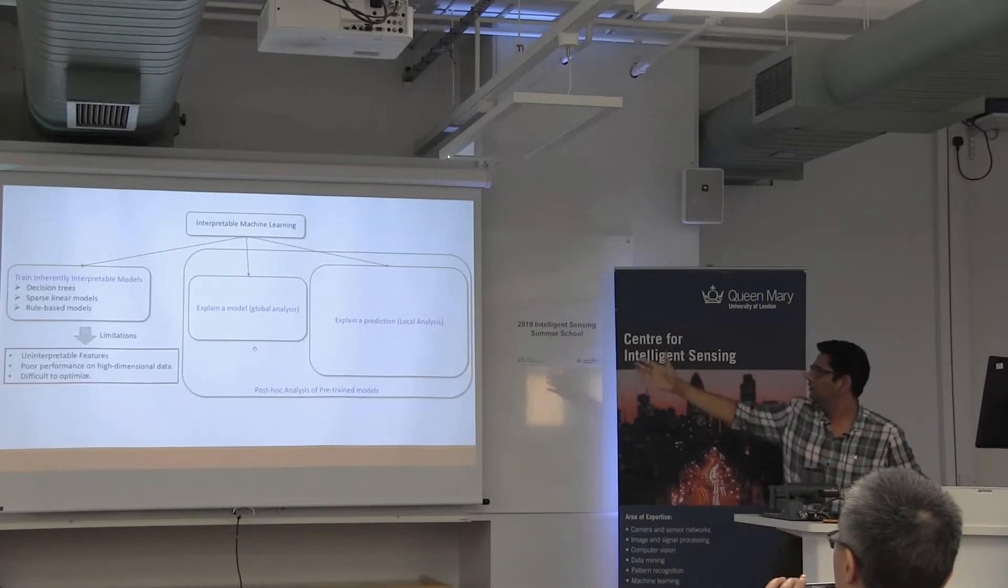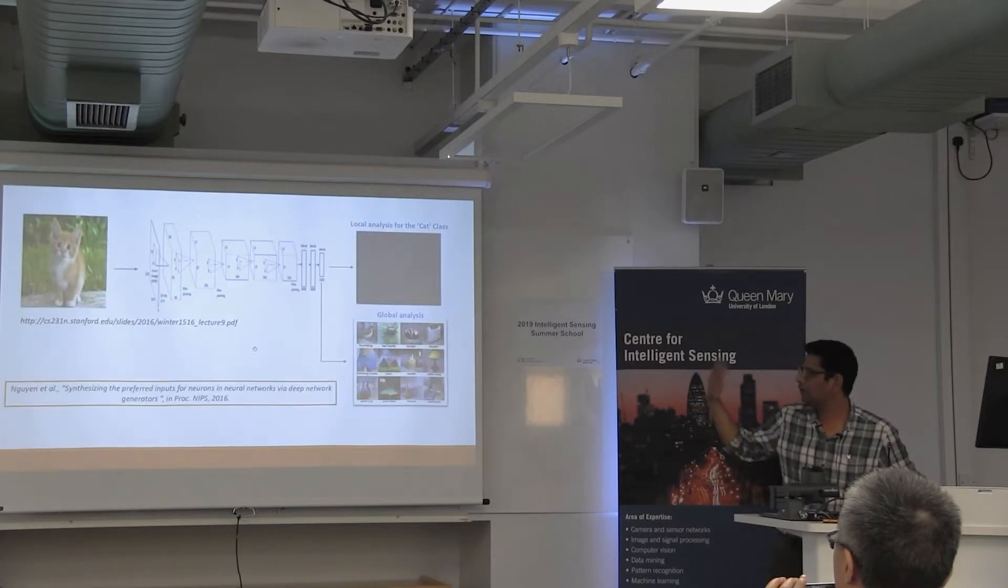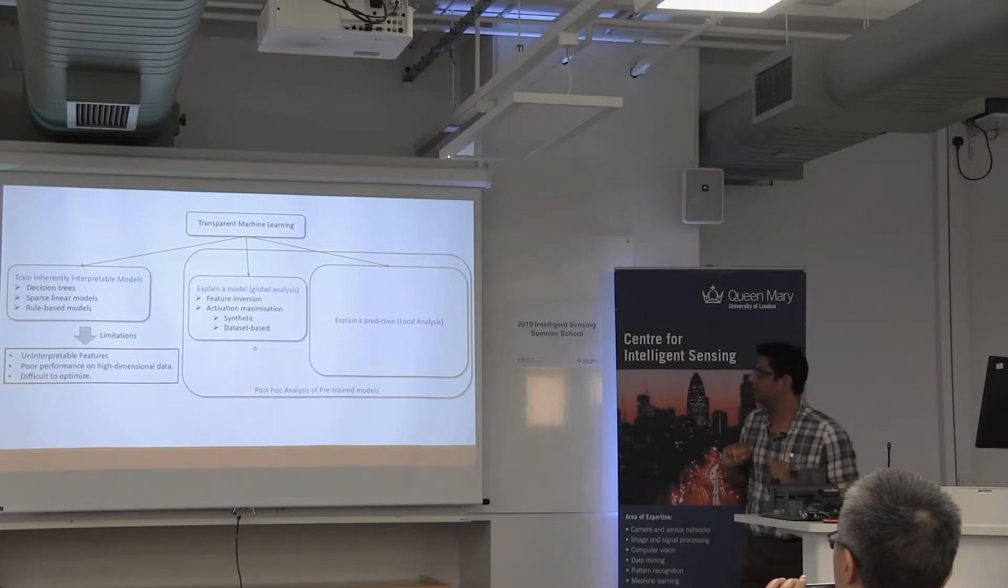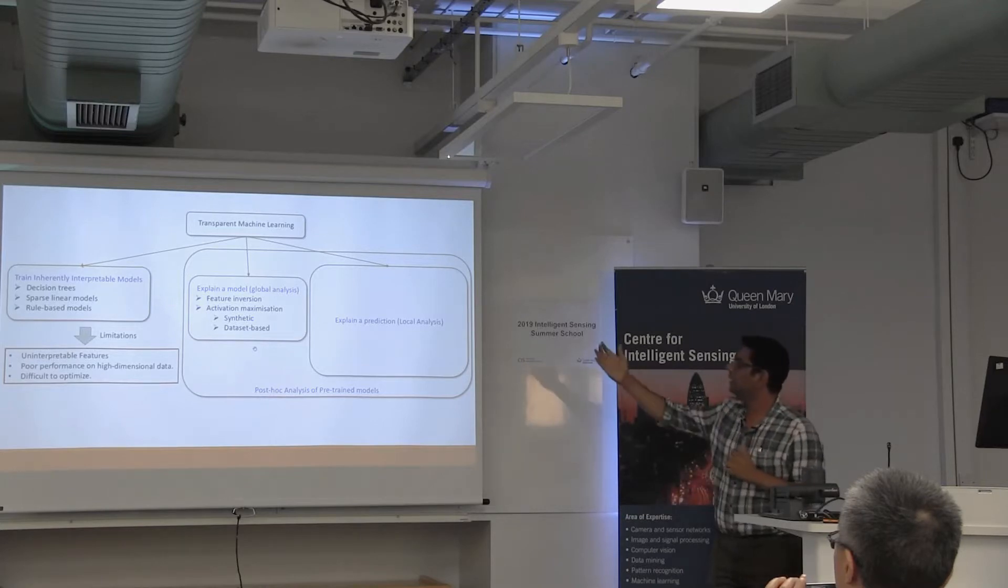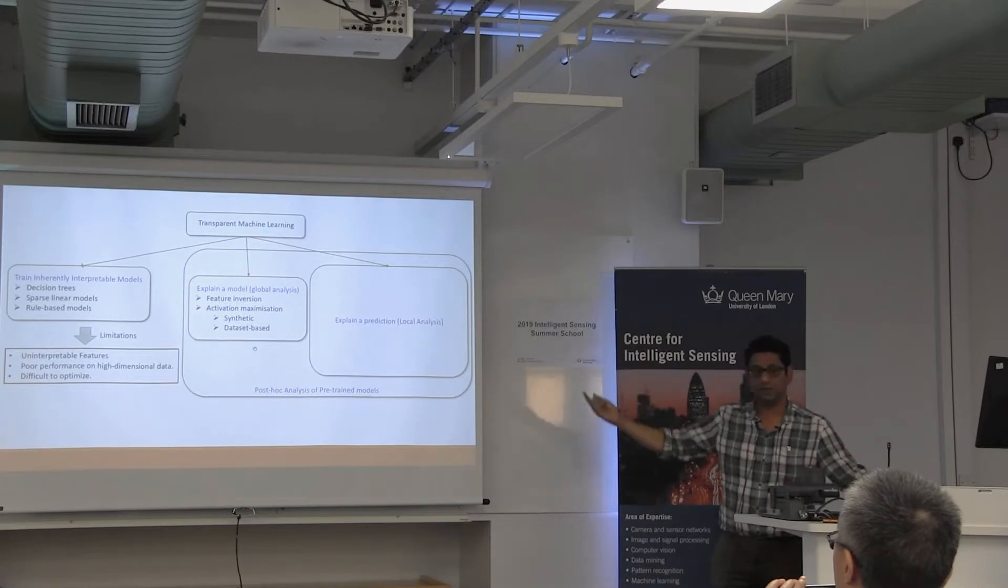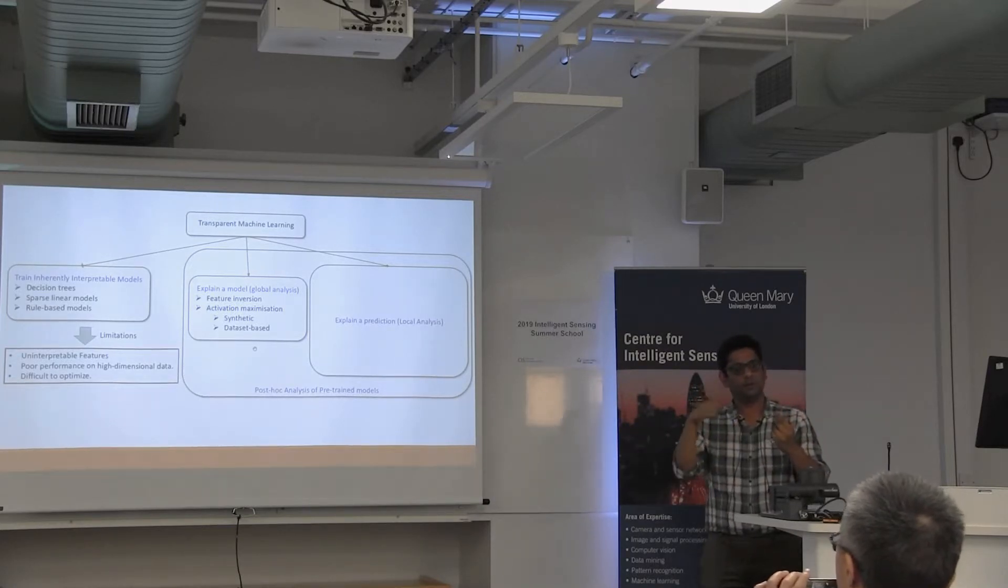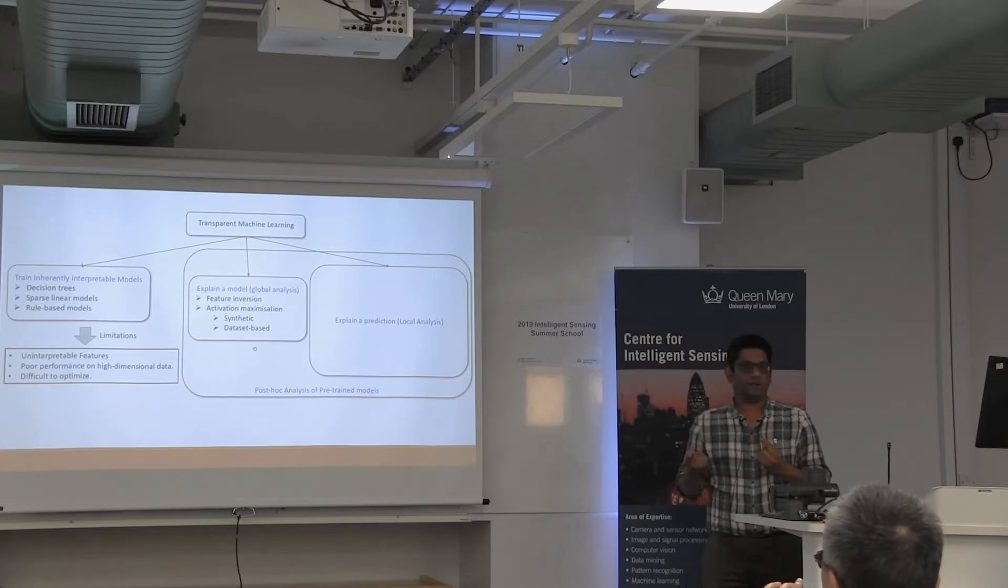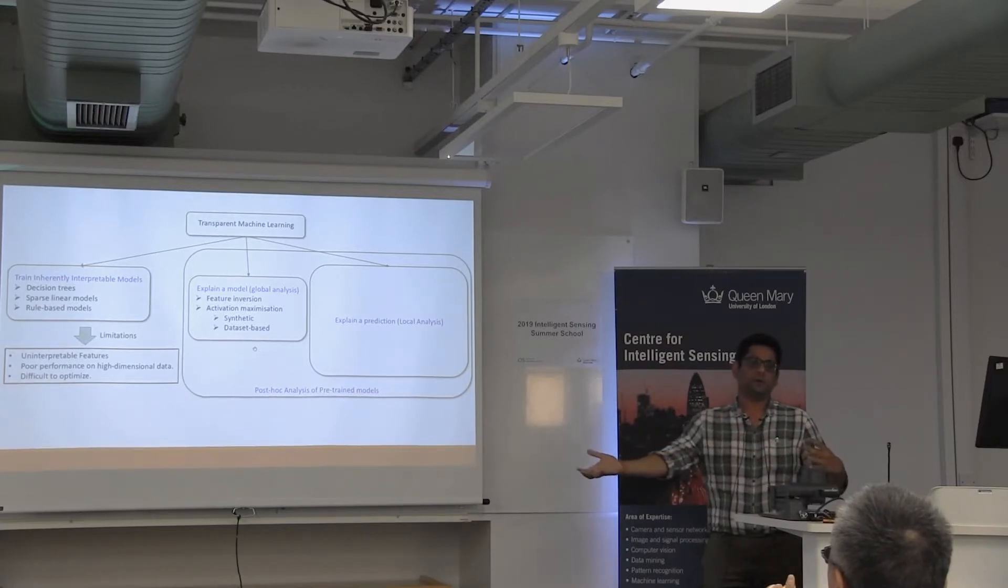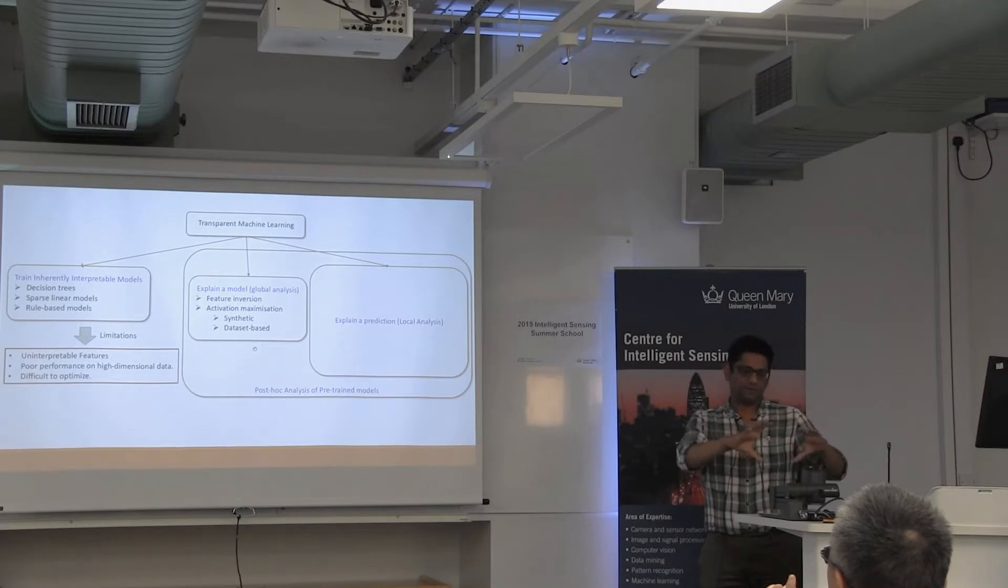This is what I mean by explain a model and explain a prediction. I'll just mention a few famous methods for each of these categories. Explain a model: feature inversion, I will explain if time permits. Activation maximization is what I talked about. You can do synthetic, which means you can start from random noise and do this process. You can do a dataset-based approach, which is very simple - you have a dataset, you pass it to the neural network, collect all the inputs which activated a particular neuron, and then try to analyze if there's a pattern in those inputs.